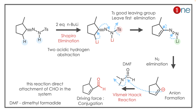First, you have alkene formation with nitrogen and lithium; then lithium and nitrogen eliminate, giving anion formation. Next, the anion attacks the DMF, leading to aldehyde formation. The Sommelet-Hauser reaction is interesting because most of the time an amine is not a leaving group — but here it acts as one.